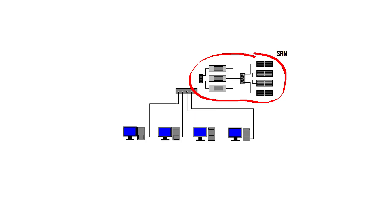Typically, what the classic SAN setup looks like is you have your regular local area network — your LAN — and then instead of connecting a NAS to it, a normal file server, you connect your SAN to it. The SAN is a dedicated network with the goal of storing data. That's all it does — it's a dedicated network that only stores data.